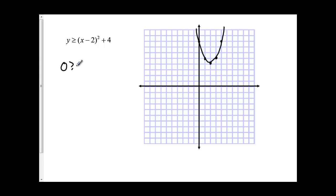And I'm going to put in 0 and see what happens. So 0 is greater than or equal to 0 minus 2 squared plus 4, which means 0 is greater than or equal to 8. Again, that's not true.